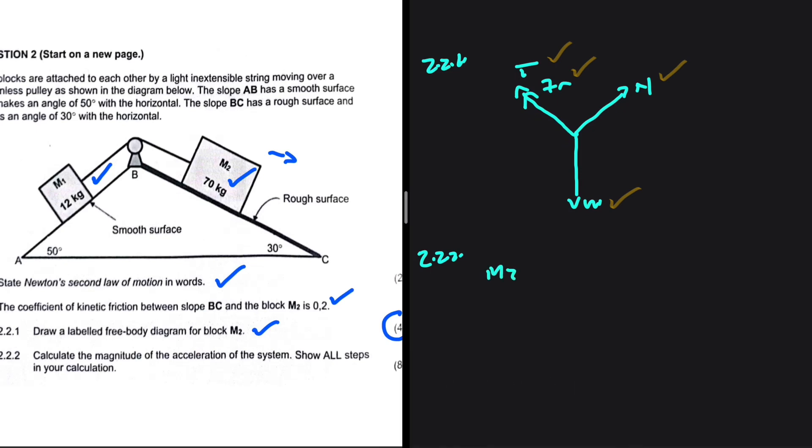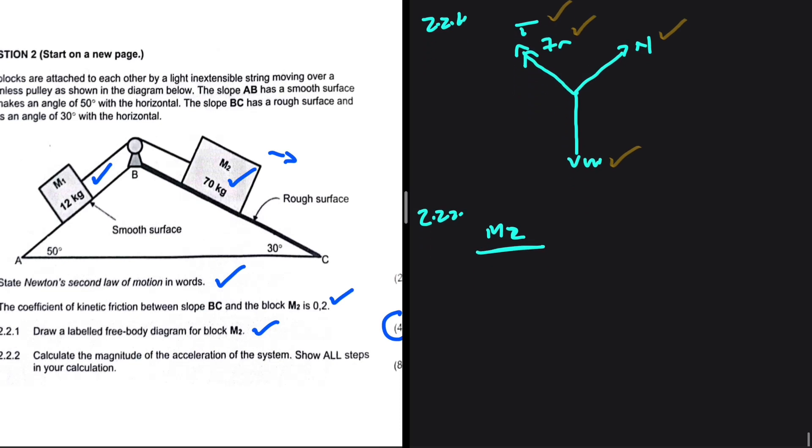So this is for M2. Why am I writing M2? I want to show the person that is marking my script exactly what I'm talking about. I don't want any confusion whatsoever. So F_net equals MA. This is how we always start. What do we say now?